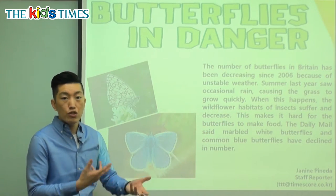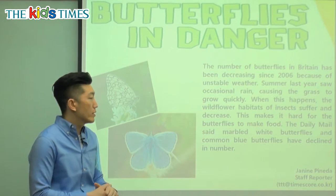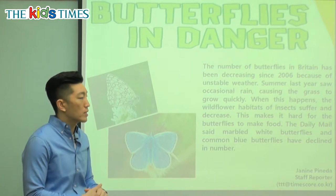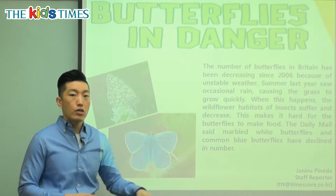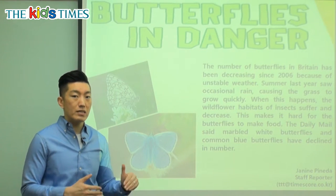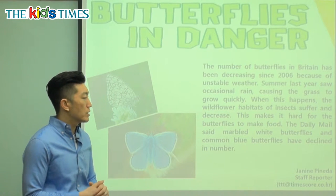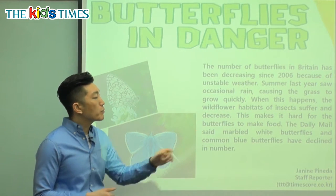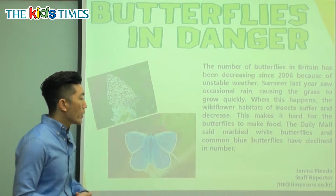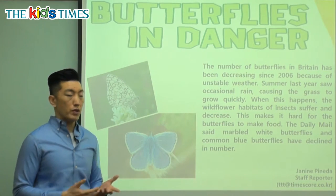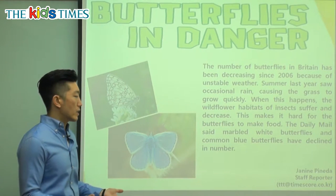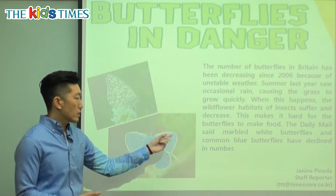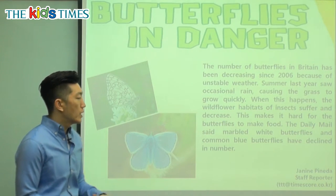Where there's a lot of flowers growing in the wild, they suffer. Suffer means they go through hard times and they decrease, so the number of insects living in those areas decreases — the number goes down. This makes it hard for the butterflies to make food. So when there's not enough insects, when they start dying off or disappear, the butterflies don't have enough food.